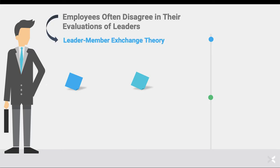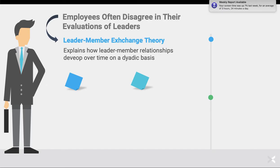This theory is called leader-member exchange theory — in short, LMX theory. Leader-member exchange theory tries to understand why some employees might have positive evaluations of leaders and other employees might have negative evaluations of leaders. In a nutshell, LMX theory explains how leader-member relationships develop over time on a dyadic basis. When we're talking about a dyad, we're talking about two people. This theory looks at the leader and the relationship that leader has with individual employees on a one-on-one basis — how do these relationships form and how do they develop across time?